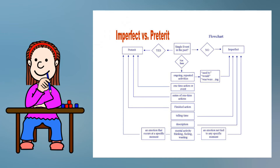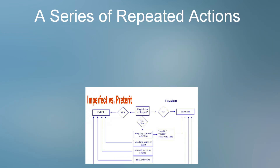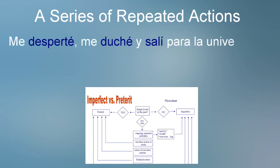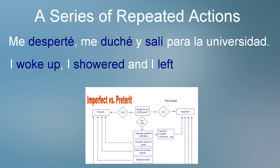As we continue downward we come to other verb uses such as a series of one-time actions. Here is an example: Yo me desperté, me duché, y salí para la universidad — I woke up, I showered, and I left for the university. Although there are many actions here, they are all single actions and therefore are expressed with the preterite.